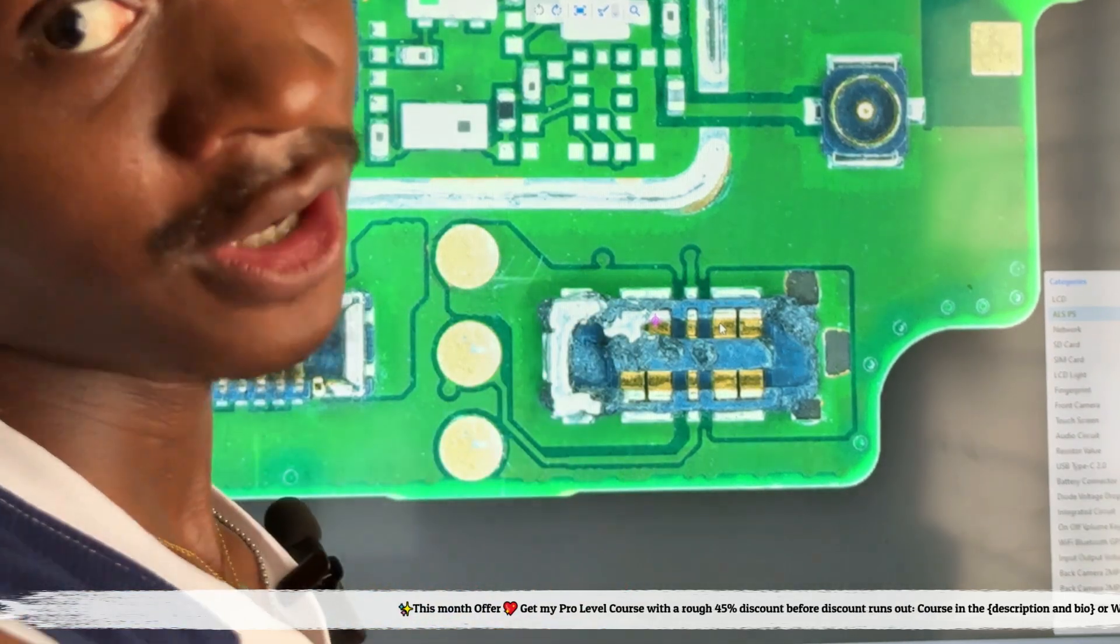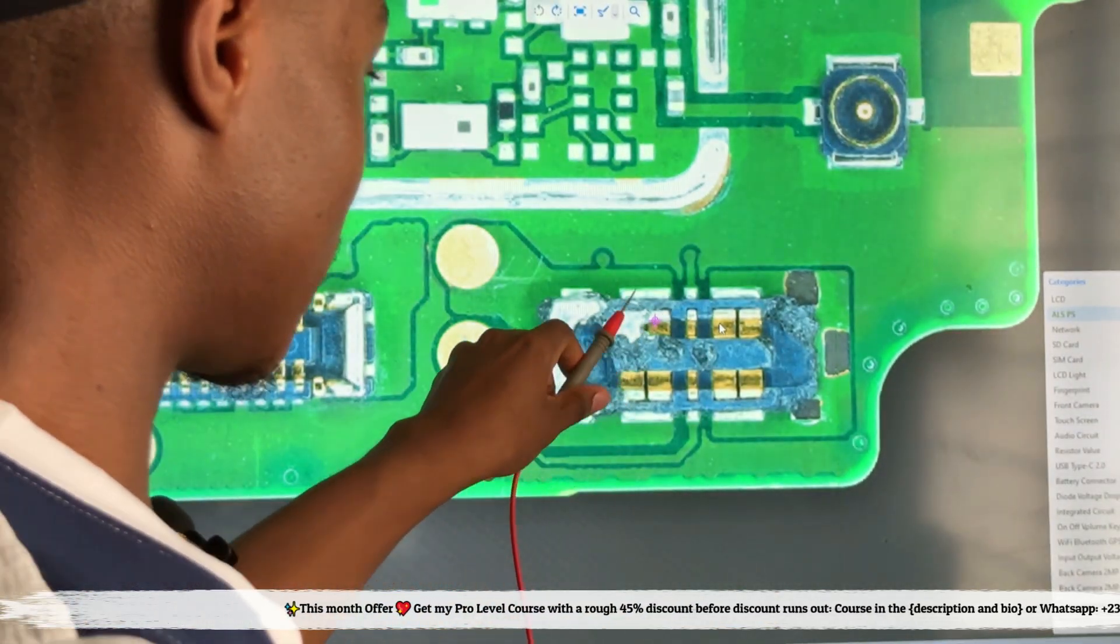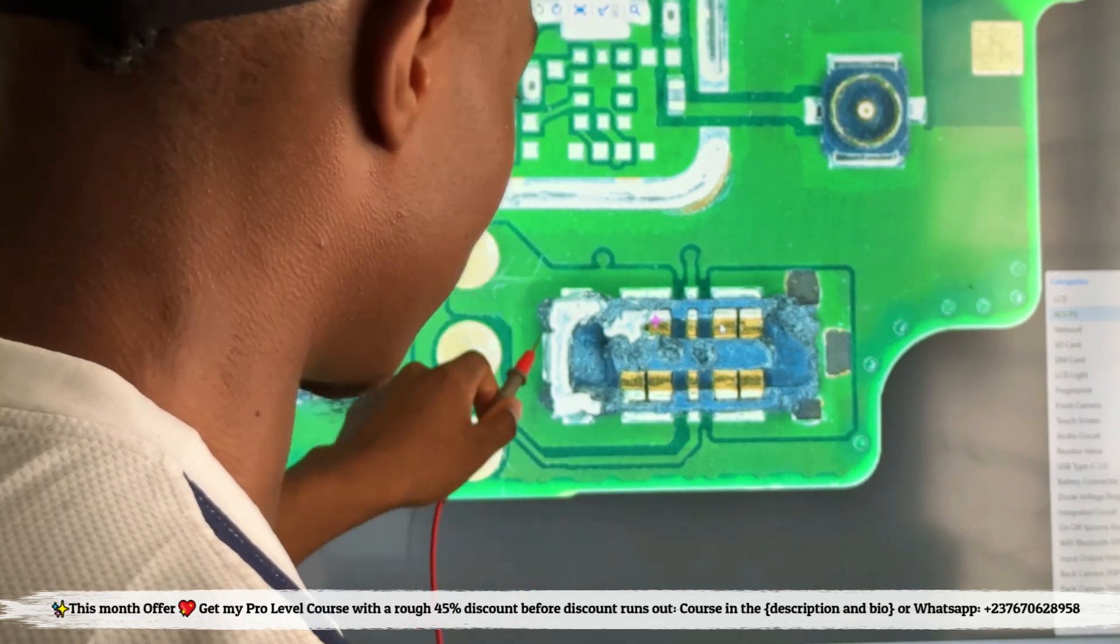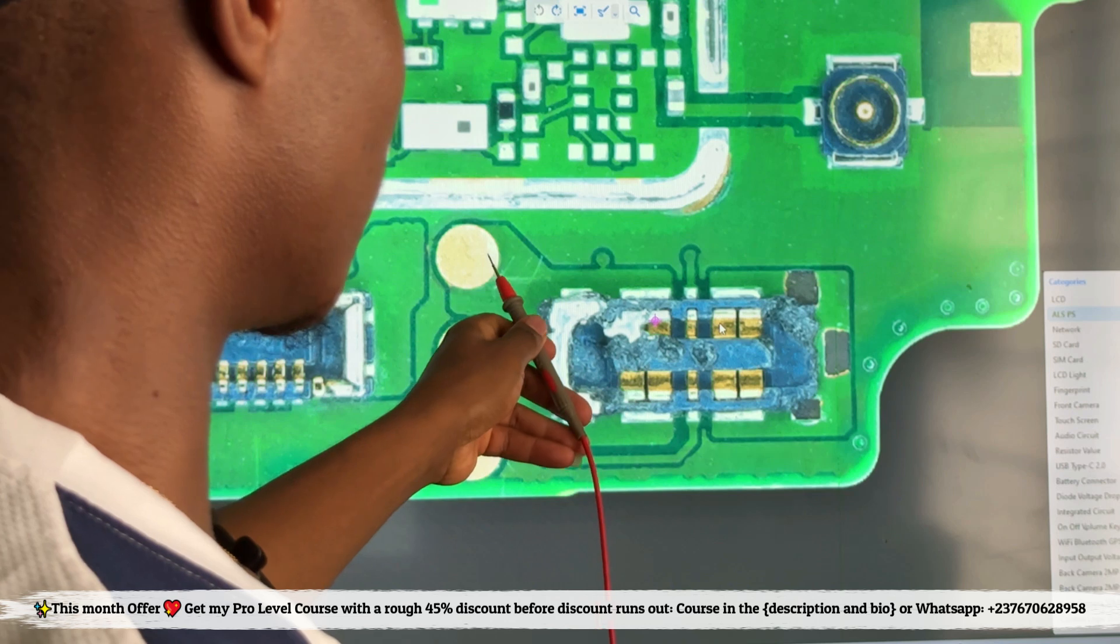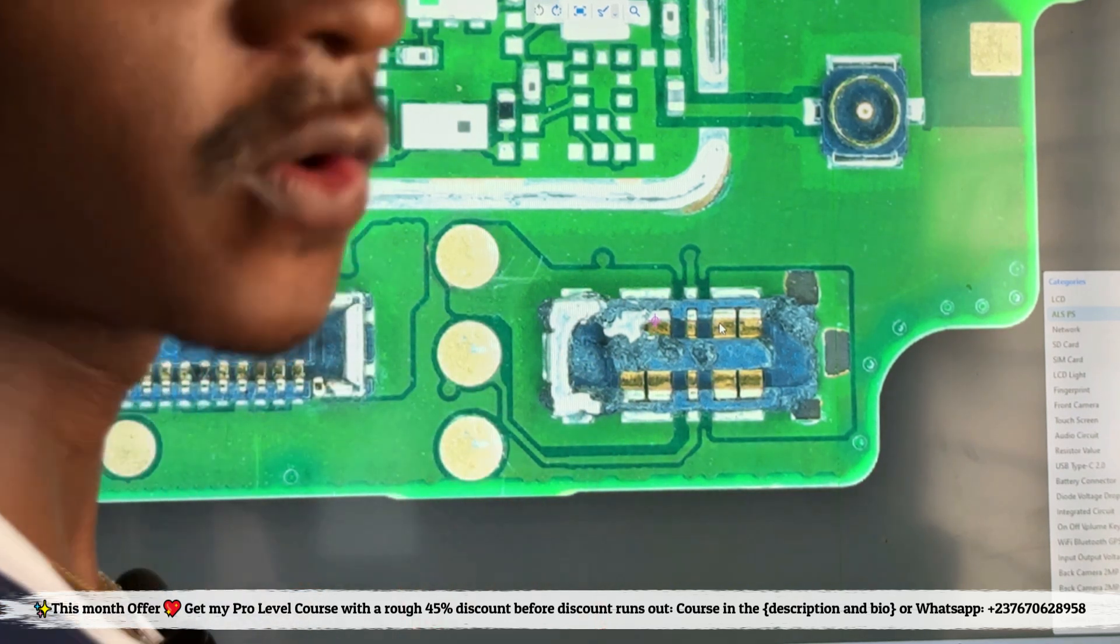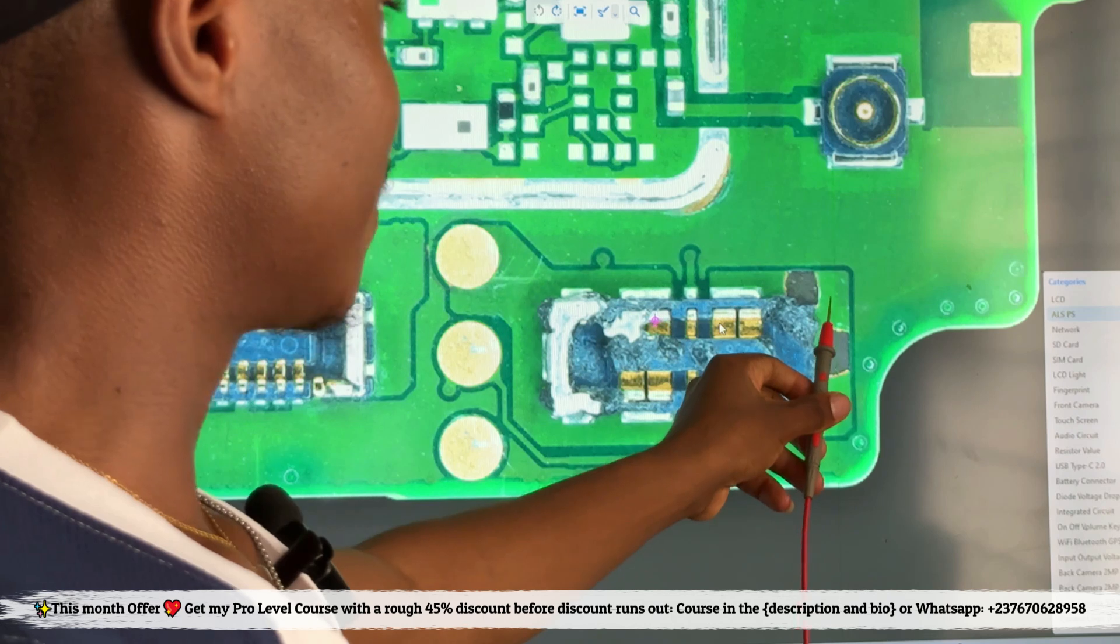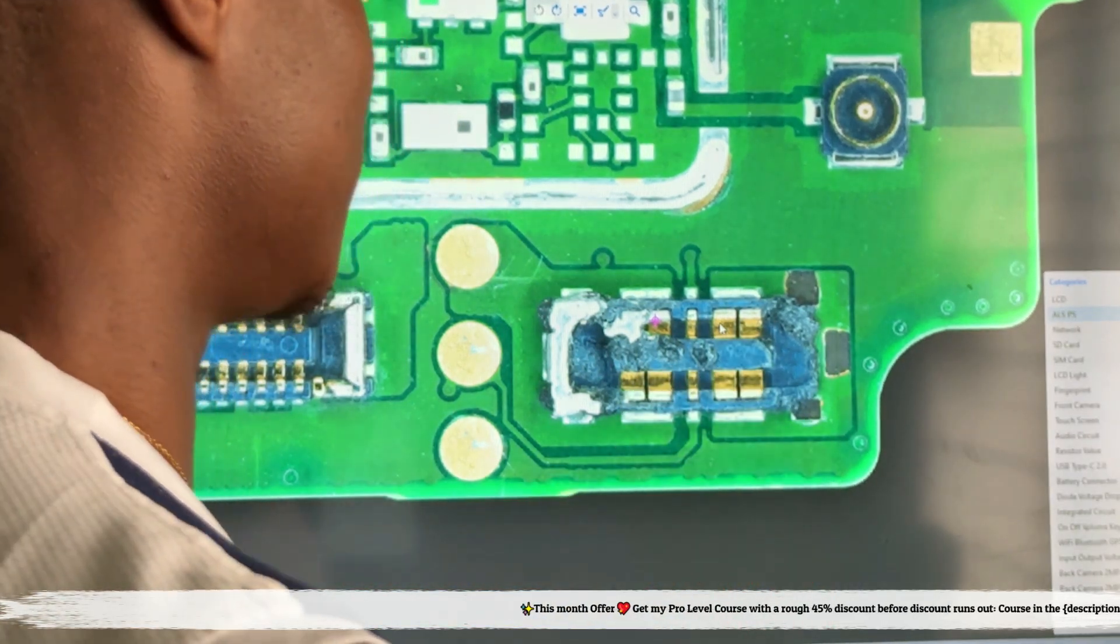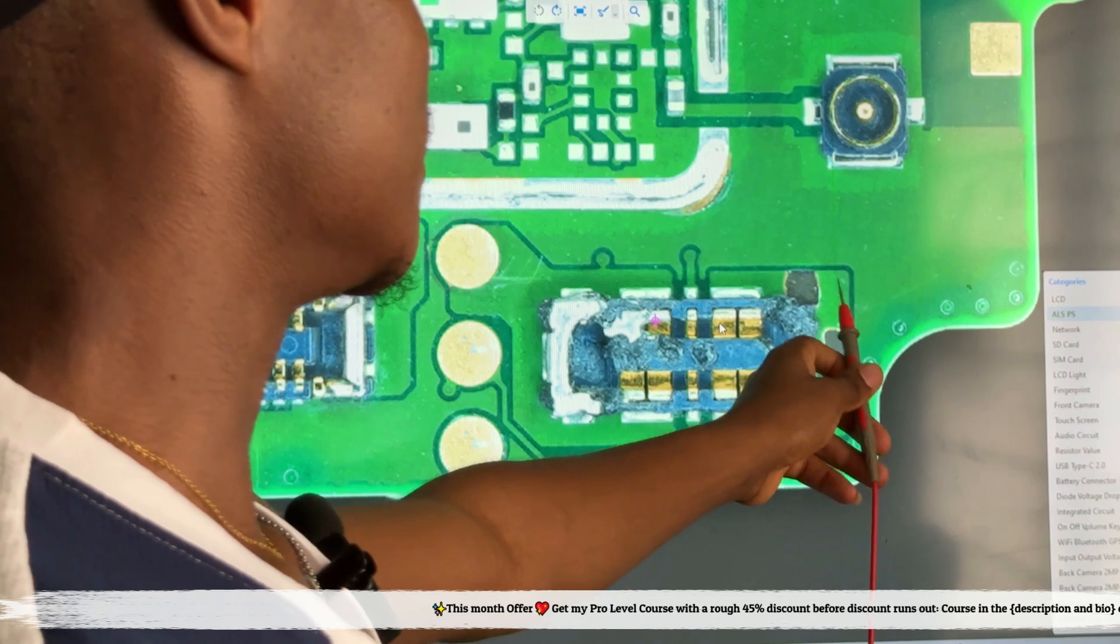This point should be the V-BAT jumper point of this mobile PCB. If this area peels off, you can see the track from here. You can just link a cable, link the V-BAT from here, then jumper it to the battery connector. Same goes for this one, you can see the big track which will be for the GND of the mobile PCB.